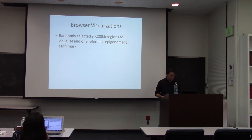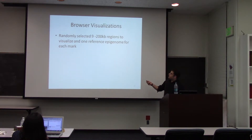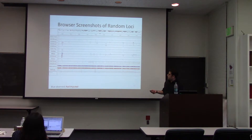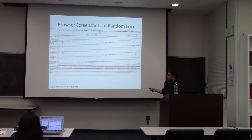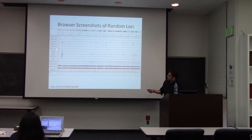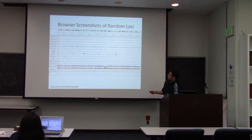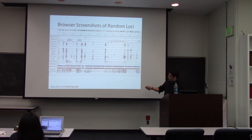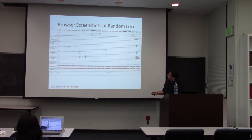Now for some results. I took nine randomly selected 200 KB regions of the genome, showing one cell and tissue type for each mark randomly selected. Red represents the imputed data and blue is the actual observed data — we're not using information from the observed data when generating the imputed data. You can see that the method captures a lot of the information about the marks from the observed data.